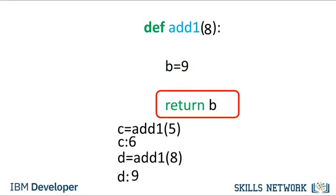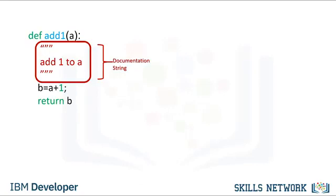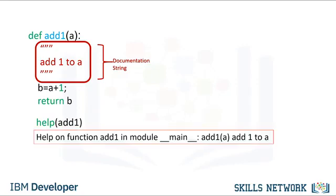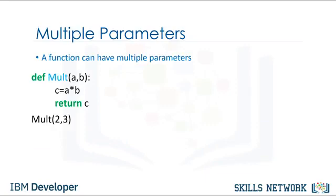It's customary to document the function on the first few lines to tell anyone who uses the function what it does. This documentation is surrounded in triple quotes. You can use the help command on the function to display the documentation, which will print out the function name and the documentation. A function can have multiple parameters. The function mult multiplies two numbers — it finds their product. If we pass the integers 2 and 3, the result is a new integer. If we pass the integer 10 and the float 3.14, the result is a float 31.4.